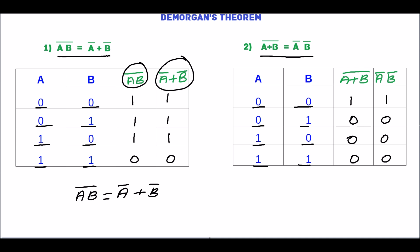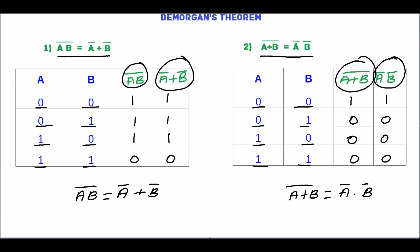In this table, both A plus B complement and A complement B complement have the same values. From this, we can prove A plus B complement equals A complement into B complement. Hope you learned De Morgan's theorem. Thank you.